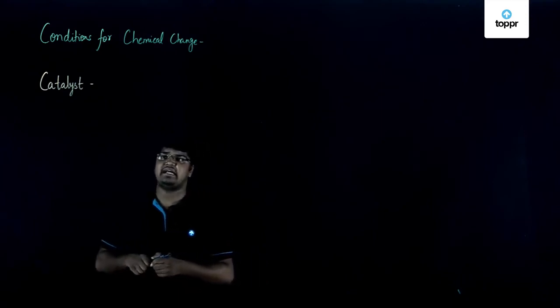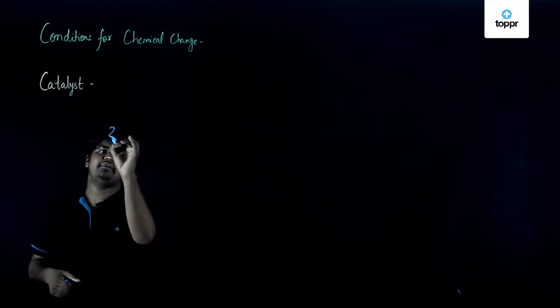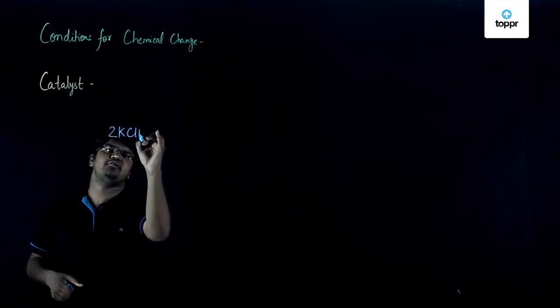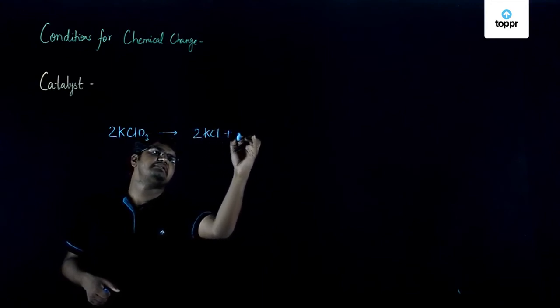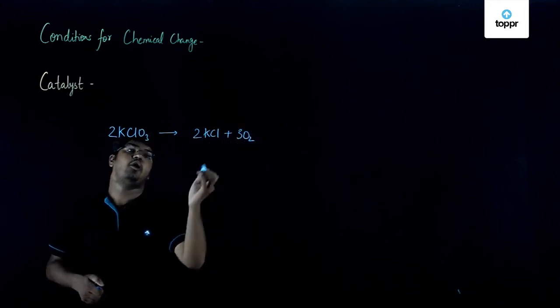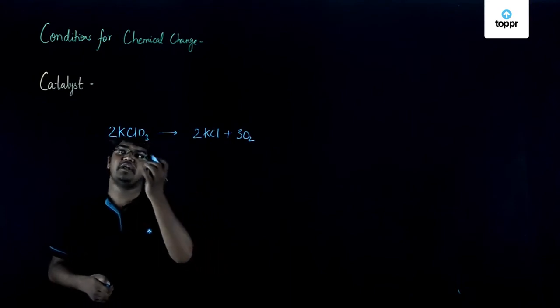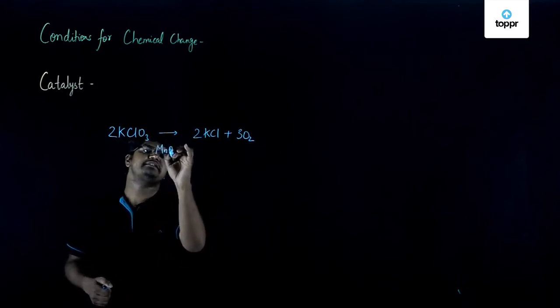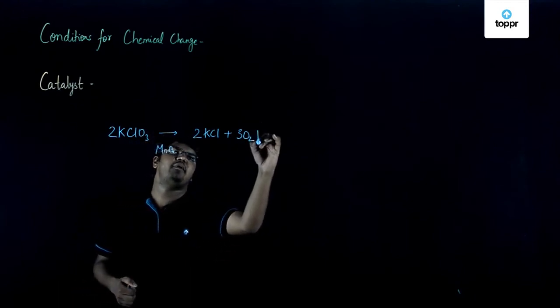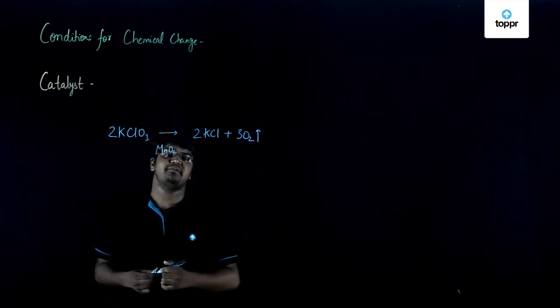That is, 2KClO3 gives us 2KCl plus 3O2. Although this reaction will be very slow without the presence of catalyst, in the presence of MnO2 this reaction will trigger and the rate of release of oxygen will be much faster.